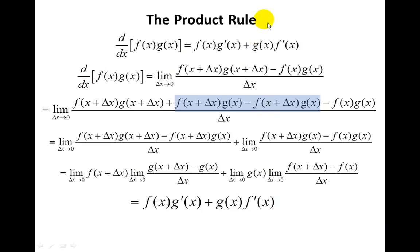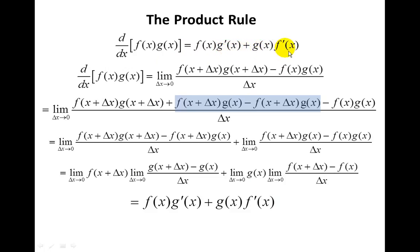We want to prove the product rule for differentiation, which states that when you have a product of two functions f and g, the derivative of that product is going to be the first times the derivative of the second, plus the second times the derivative of the first.